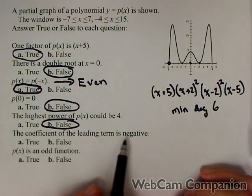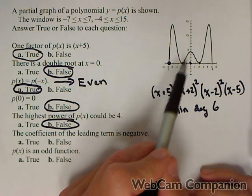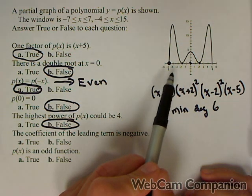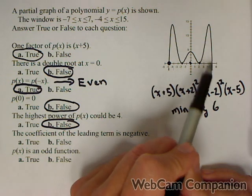The coefficient of the leading term is negative. Well, we can see that we have a polynomial of even degree. We can tell because both ends go the same direction.